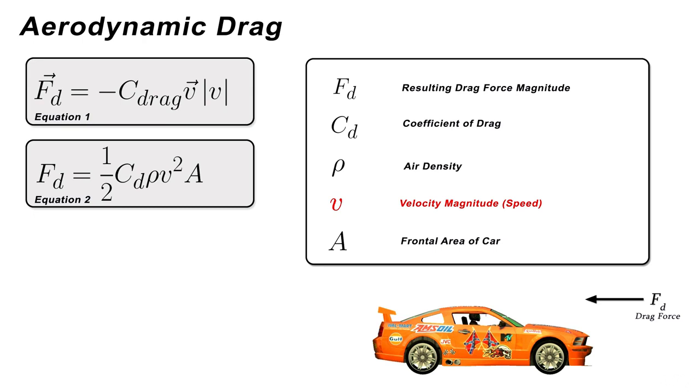Finally, A is the frontal area of the car, which once again is different for every single car and is usually something stated in the manual in the specifications section or available on the manufacturer's website.